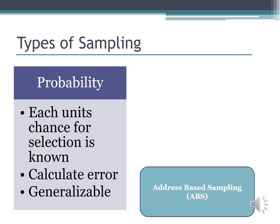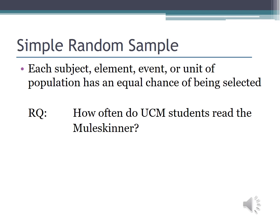So let's say you want to go with probability sampling. How do you do it? Three ways are through a simple random sample, through random digit dialing, or through address-based sampling. In a simple random sample, each subject, element, event, or unit of the population has an equal chance of being selected. I've done this in a classroom setting where I put numbers in a hat, and if they drew a certain number, they got selected to be part of the survey.